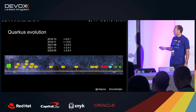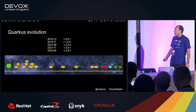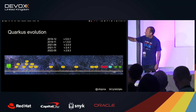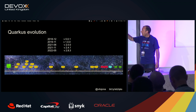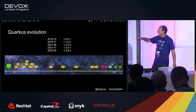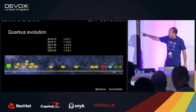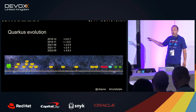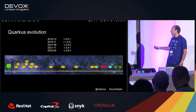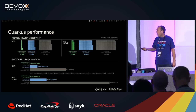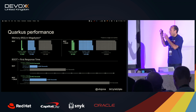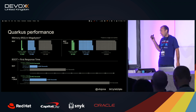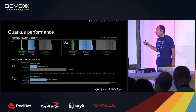About the Quarkus evolution — it started more or less at the end of 2018. The last version is 2.9.0, and they are producing versions every week. This is a famous chart about performance regarding Quarkus.